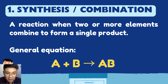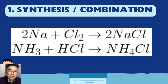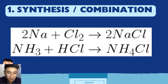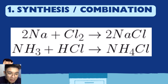Notice in the reactant part, A and B are separate. In the product side, they combine into AB — that is a combination reaction. Let's have an example using elements: 2Na (sodium) + Cl2 (chlorine) → 2NaCl, which is sodium chloride, your table salt.